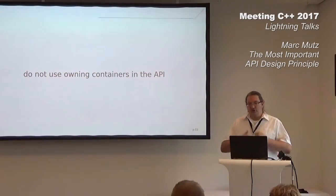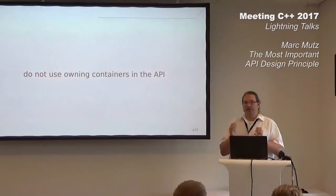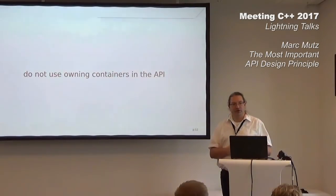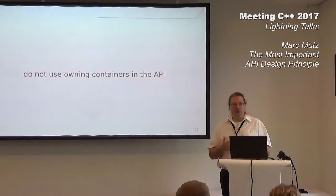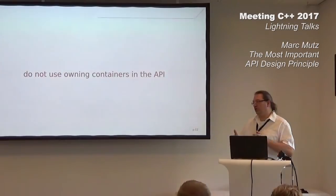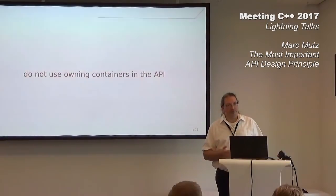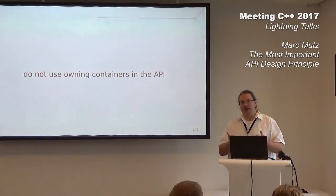The idea is that you do not use owning containers in the interface of your class. But what if I need to put a std::string with 15 kilobytes of data into my class — I need to move it in. Well, do you actually know whether the class author chose to store that data as a std::string? If you use std::string in the API, you're all but forced to use std::string in the implementation. Maybe the author wanted to use one of John Lakos's fancy allocators with a std::vector — who knows?